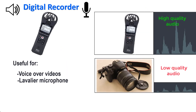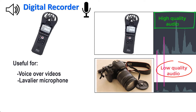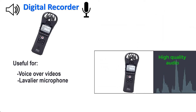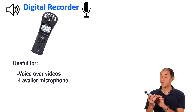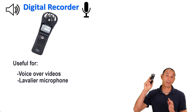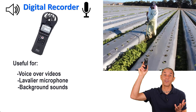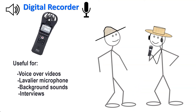And then later when you edit the video, what you're going to do is synchronize the high-quality recording from your digital recorder with the low-quality audio of your voice on the camera, and you're going to use the high-quality one for the video and it'll sound really good. You can also use your digital recorder to capture background sounds that might enhance other visuals in your video, or even interview somebody.